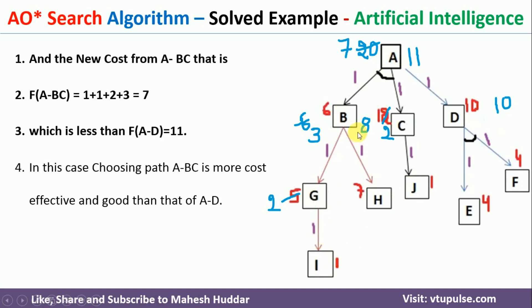In this example, we have seen a case where we are not able to solve the problem by traversing the entire graph. I have explained how to apply the AO* search algorithm for a given graph to find a solution. I hope this concept is clear. If you like the video, please like and share with your friends, press the subscribe button for more videos, and press the bell icon for regular updates. Thank you.